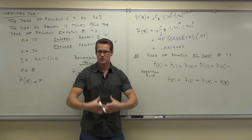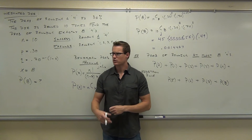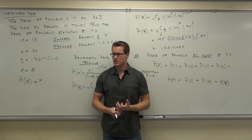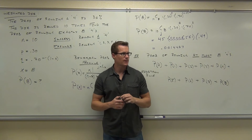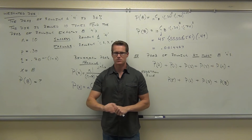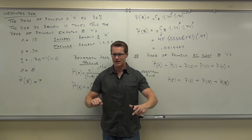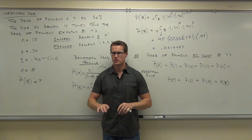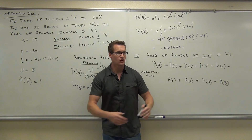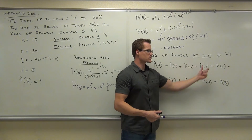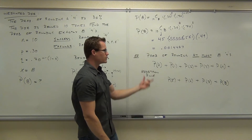This is an addition rule for disjoint sets. You can't have both three successes and four successes at the same time. Can you get both three fours and four fours when rolling the die 10 times? No — those cannot happen at the same time. These are disjoint outcomes, so we add them all up. There's no 'and' of them happening simultaneously — we just add up each of those probabilities.